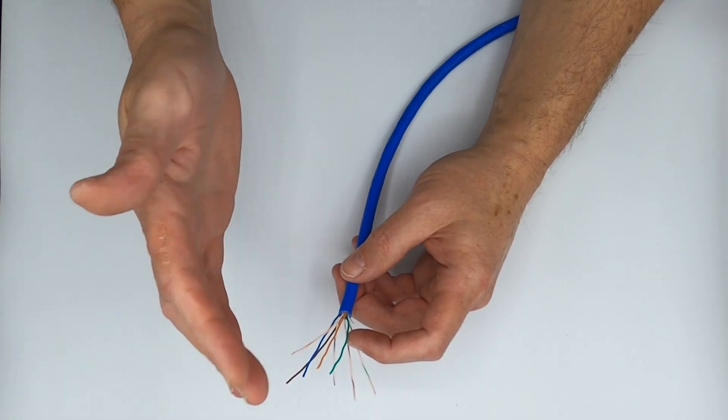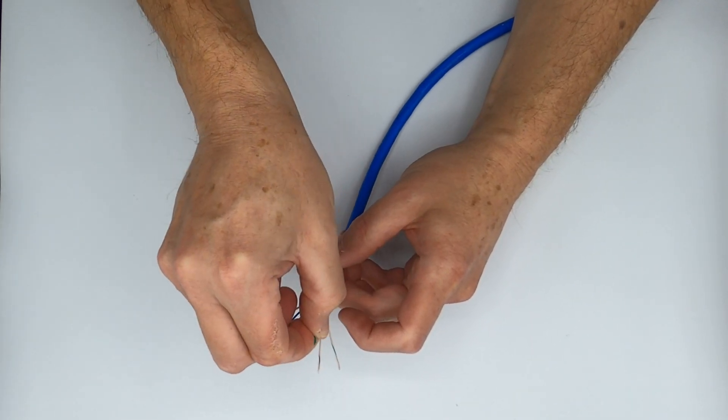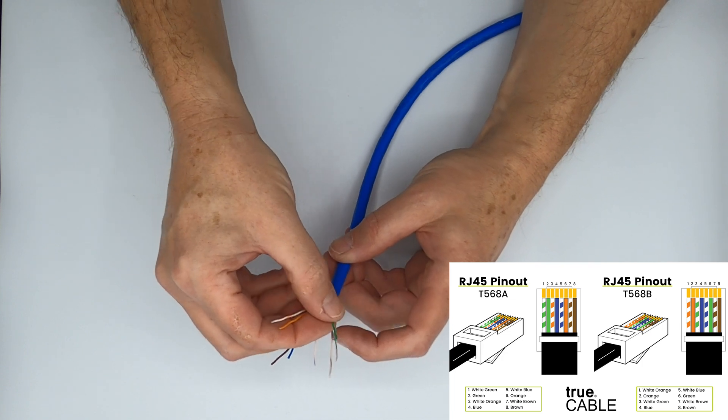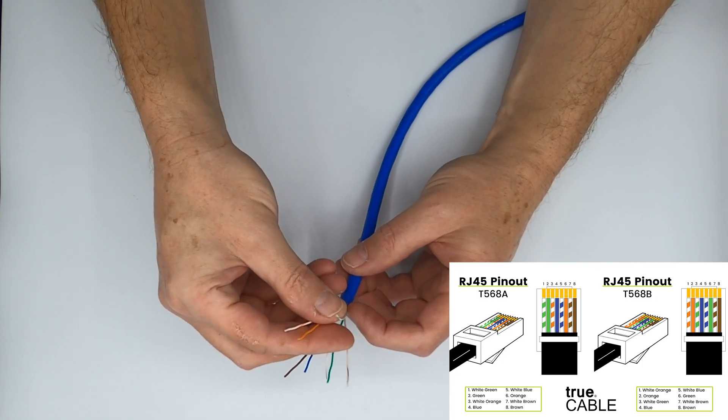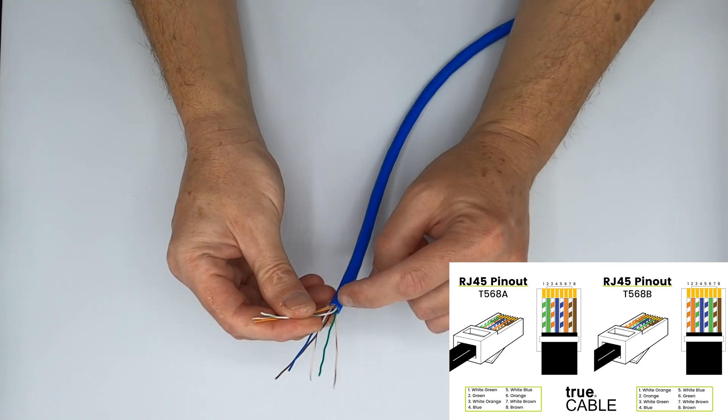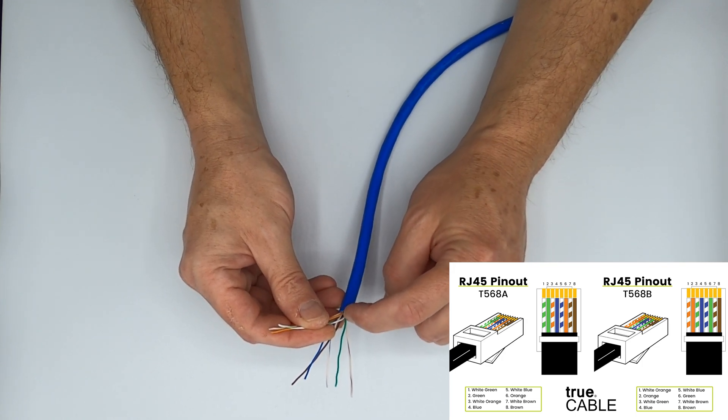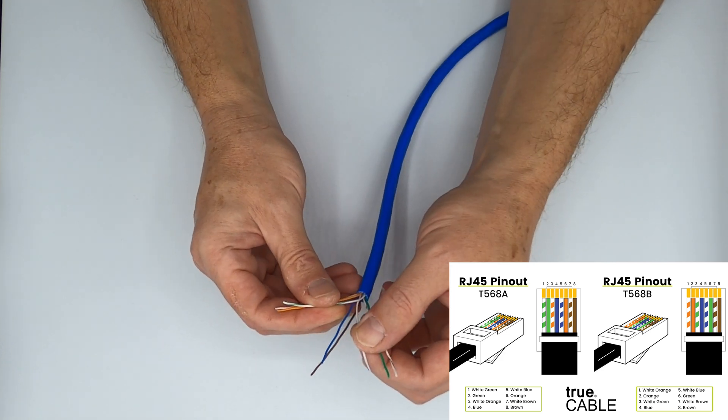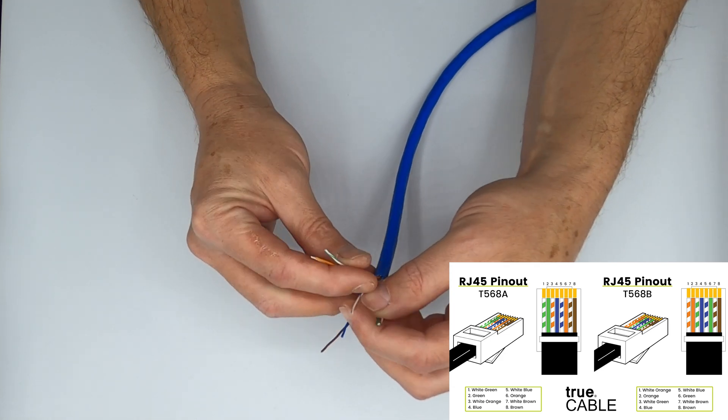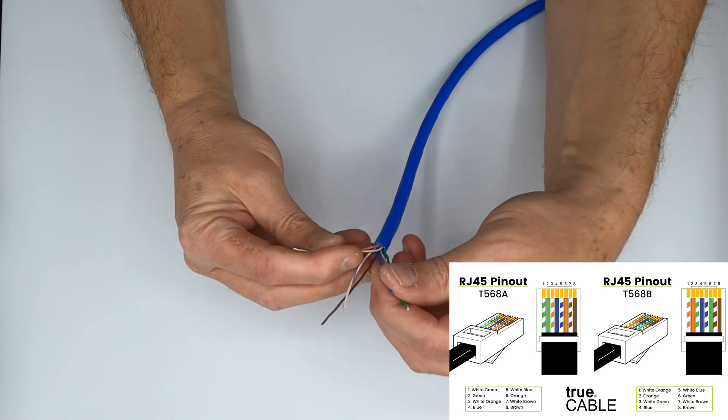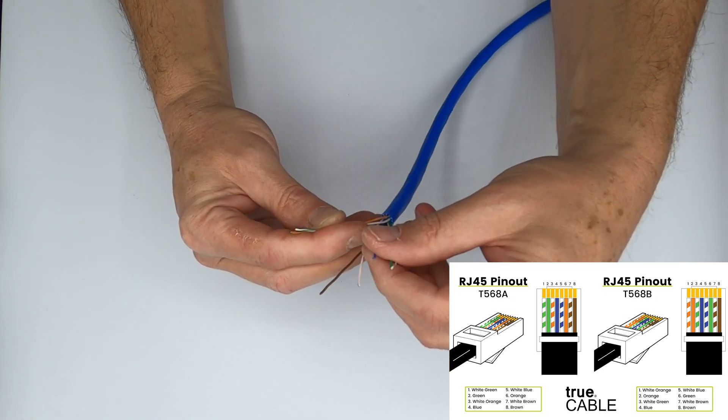So basically you start, well I like to use the T568B sequence, which is white orange, orange, and then white green. While you're working on this also, it's a good idea to keep things clean down here. Don't let things cross up at the bottom. So white green.